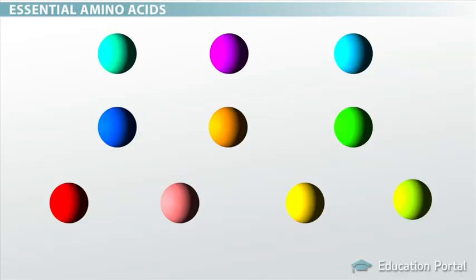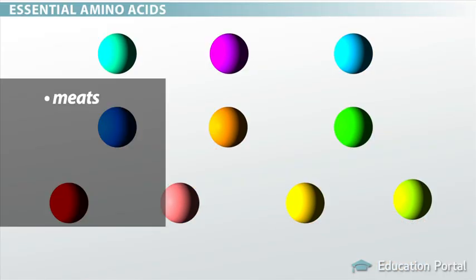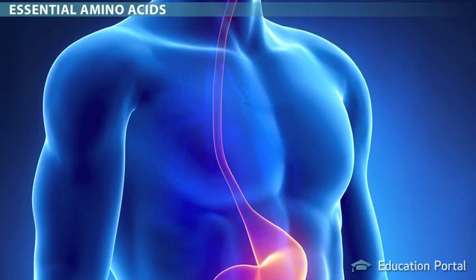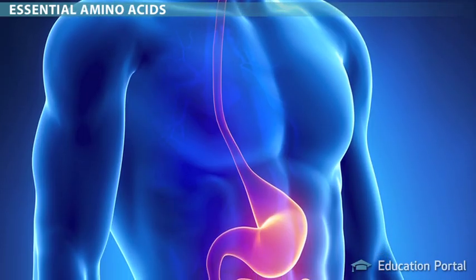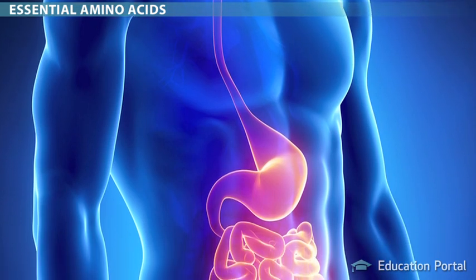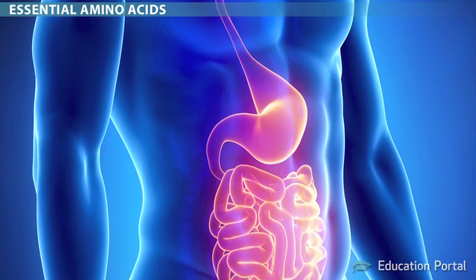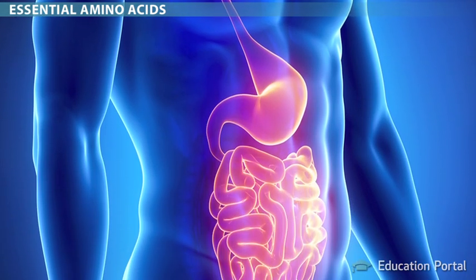Of these 20 amino acids, 10 are essential, so you consume them when you eat protein-containing foods such as meat, fish, poultry, eggs, and certain combinations of plant proteins. These foods get broken down in your digestive tract into the individual amino acids, which are then reassembled by your body to make the wide variety of proteins it needs.